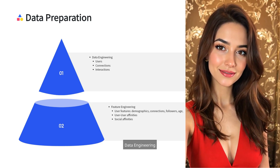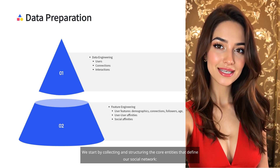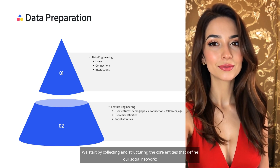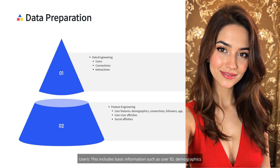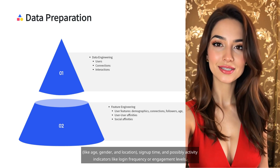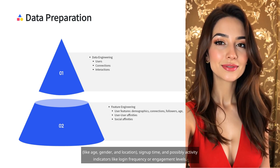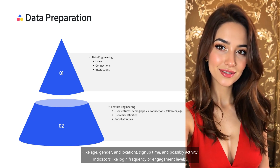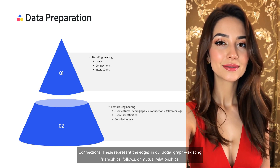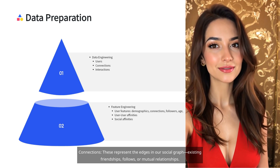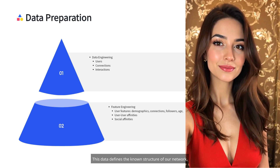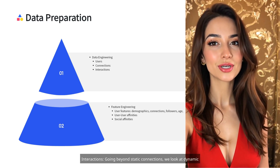In the data engineering phase, we start by collecting and structuring the core entities that define our social network. Users: this includes basic information such as user ID, demographics like age, gender, and location, sign-up time, and possibly activity indicators like login frequency or engagement levels. Connections: these represent the edges in our social graph — existing friendships, follows, or mutual relationships — and define the known structure of our network.